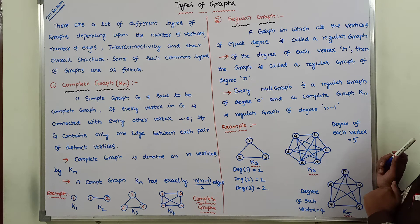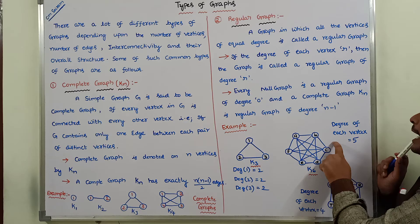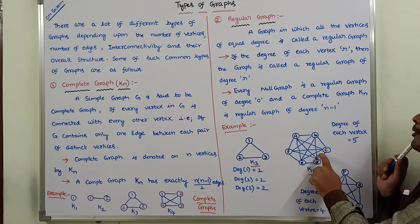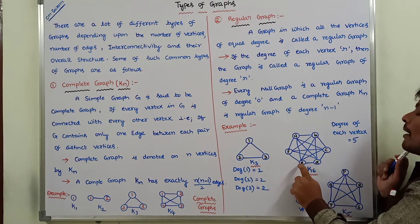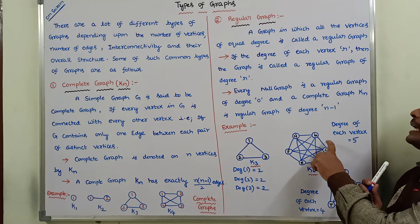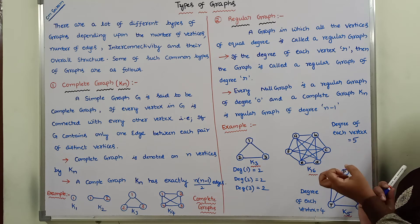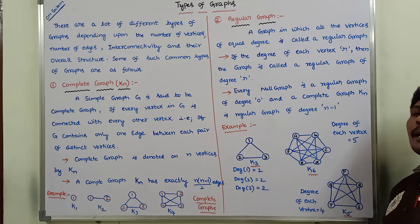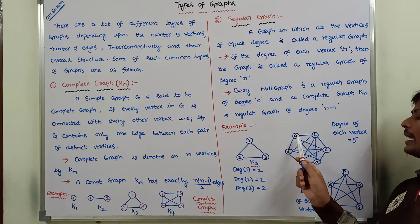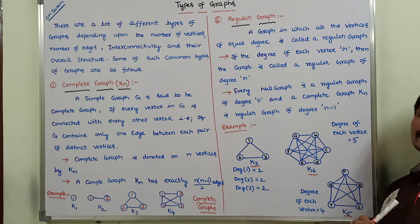Every vertex in K6 has degree 5. Five edges are incident on vertex A, B, C, E, and F respectively. The degree of each and every vertex in K6 is 5 because every vertex is connected with the remaining 5 vertices. Consider vertex A — the remaining vertices are B, C, D, E, F — so A is connected with all five, giving degree 5.